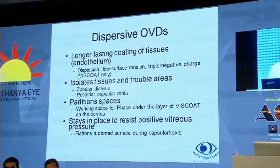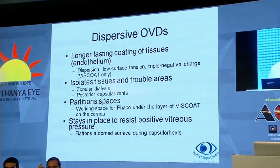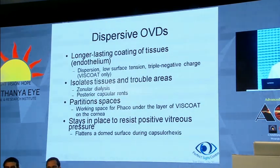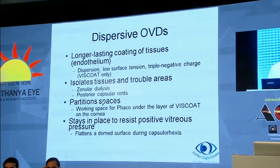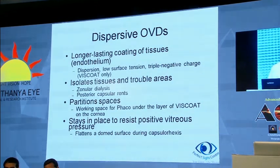Dispersive OVDs provide longer-lasting coating of tissues, especially the endothelium, by dispersion, and they have low surface tension. Viscoat, for example, is a product which has a triple negative charge — the higher the negative charge, the greater the cohesiveness. Dispersives isolate tissues in trouble areas, such as in zonular dialysis and posterior capsular rents. They partition space, providing a working space for phacoemulsification under the layer of viscoat on the cornea, and flatten the dome surface during capsulorrhexis.